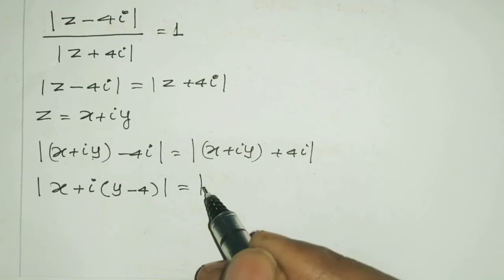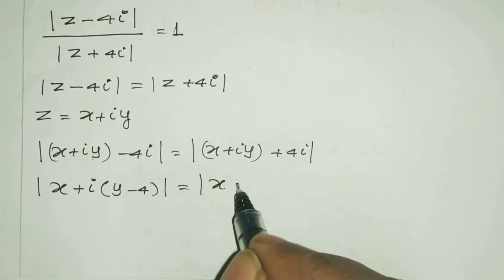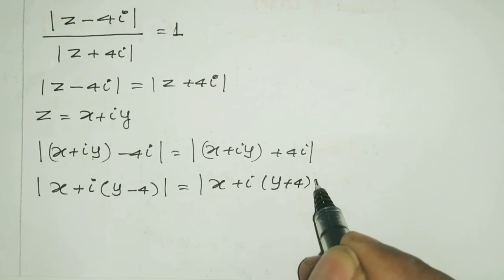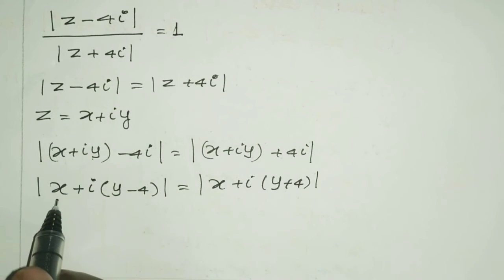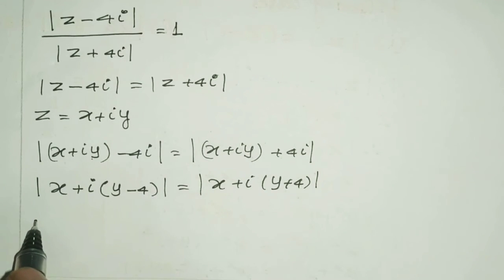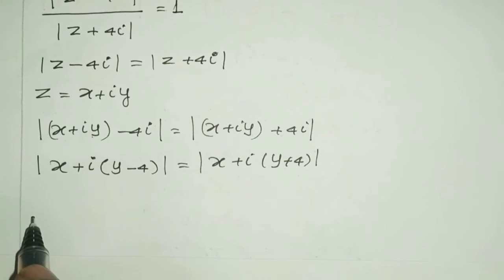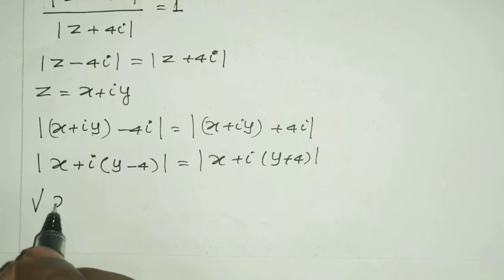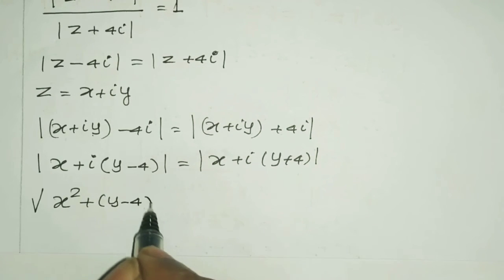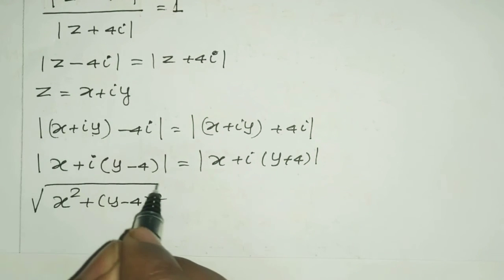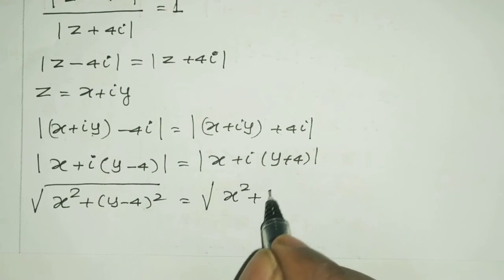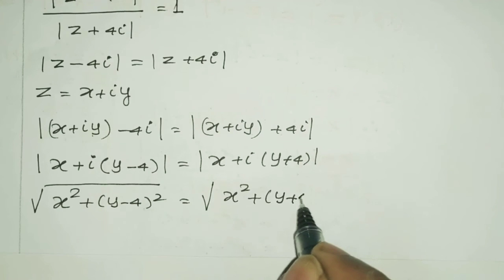equals modulus of x plus i(y plus 4). Now applying the modulus formula: modulus of a complex number equals square root of (real part squared plus imaginary part squared). So square root of (x squared plus (y minus 4) squared) equals square root of (x squared plus (y plus 4) squared).